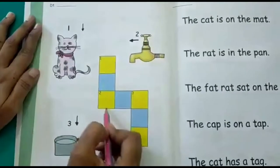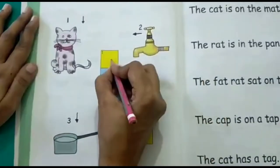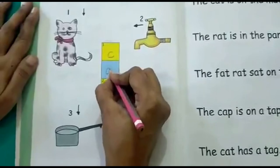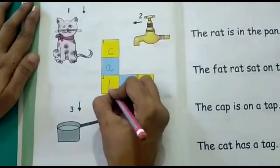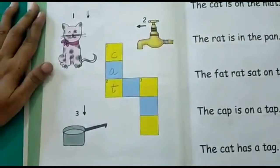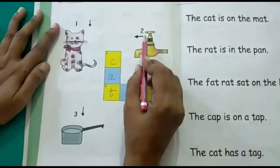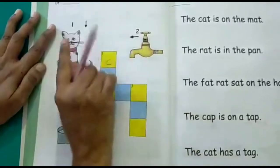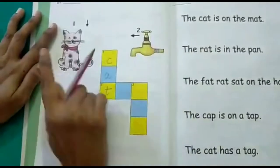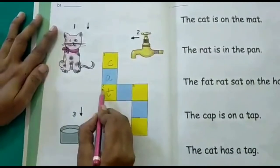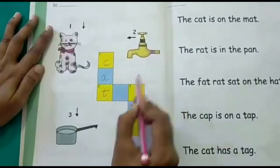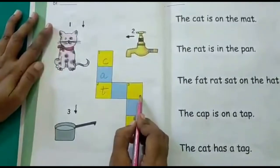So the picture of the cat, you have to write the spelling of cat. The second picture is of a tap and it is pointing across. This way. Correct? So where is 2 written? Here. Picture is of a tap. You have to write the spelling of a tap.